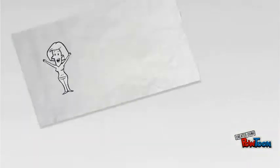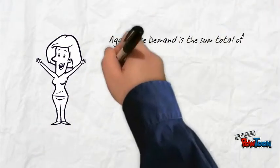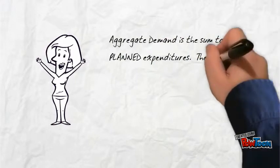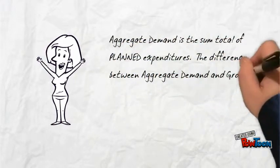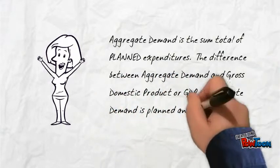Realize that aggregate demand is a sum total of all planned expenditures. The difference between this and when we start looking at gross domestic product or GDP is aggregate demand is planned and GDP is what has actually happened.